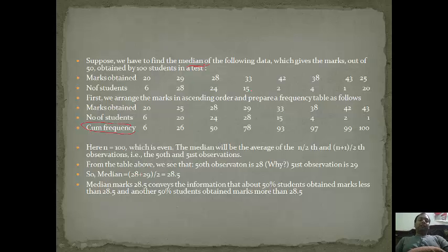Now coming to cumulative frequency. What is cumulative frequency? Number of students is frequency. Cumulative frequency is adding the frequency in subsequent periods. This becomes cumulative frequency. Like here 6, then 6 plus 20 will be 26, then 26 plus 24 becomes 50, then 50 plus 28 becomes 78, 78 plus 15 becomes 93, 93 plus 4 becomes 97, 97 plus 2 becomes 99, 99 plus 1 becomes 100. So this is cumulative frequency.